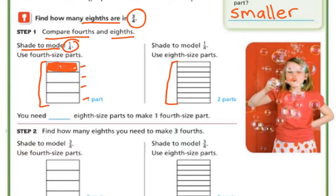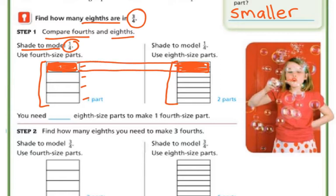It would be a lot easier if I had them right next to each other, but as you can see, I'm going to be shading 2 of the parts. If these were side by side, you'd be able to see that that was the exact same amount. So you need 2 eighth-size parts to make 1 fourth-size part.